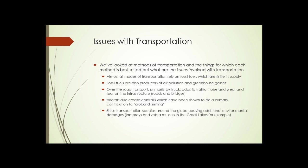Aircraft, in addition to burning fossil fuels and creating noise, also create contrails — those white streams of steam we see behind jet aircraft flying through the sky. Contrails have been shown to be a primary contribution to something called global dimming. Ships, in addition to using fossil fuels, transport alien species around the globe, causing additional environmental damage. For instance, sea lampreys and zebra mussels came to the Great Lakes and are now doing a great amount of damage there.